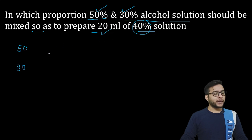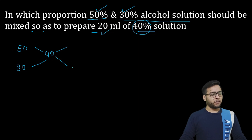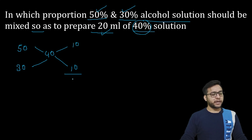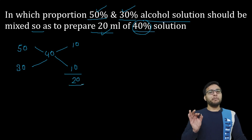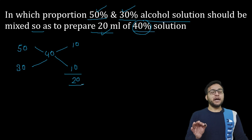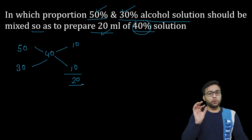अब हमें required कितना है — 40% चाहिए, यह हमने required कर दिया। अब simple से एक first step इस तरीके से लिखते हैं। अब हमें पता करना है कि 50% का और 30% का कितना ml चाहिए, 40% बनाने के लिए, वो भी 20 ml।